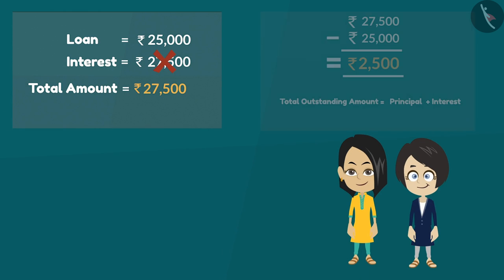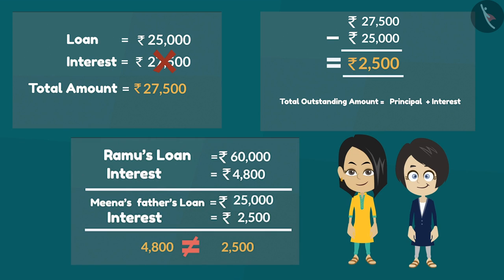So friends, along with Bubbly and Meena today we have learned how to find out the total outstanding amount by adding the principal amount and interest. We also learned that the interest amount changes according to the loan amount. Thank you!